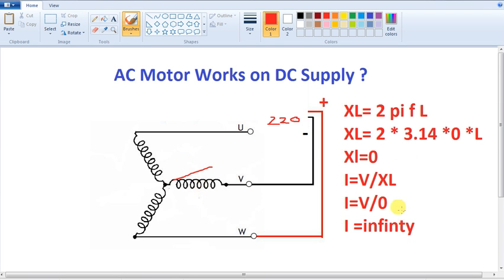When current is maximum, it's a short circuit. So if we operate an AC motor with DC supply, that AC motor will be short circuit. Time is 0, positive negative direct type.